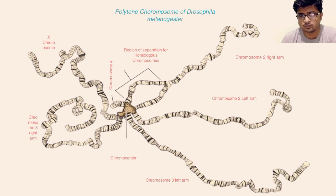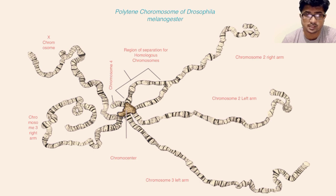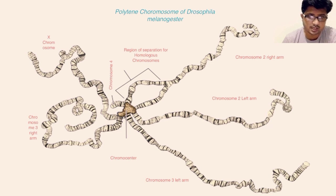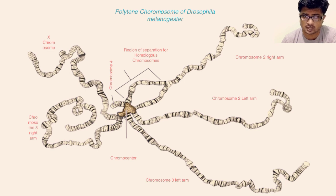Why do they form? The mechanism behind this is the endo-reduplication of the chromosomes. There is no division of the cells — only the chromosomal strands divide. Again and again their chromosomal strands divide to form a large multi-stranded giant structure, sometimes described as a wave-leg or spider-leg structure. This is called the polytene chromosome.